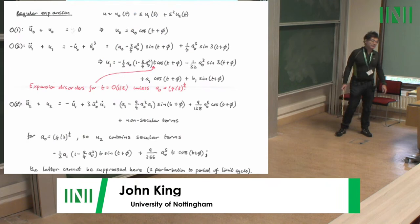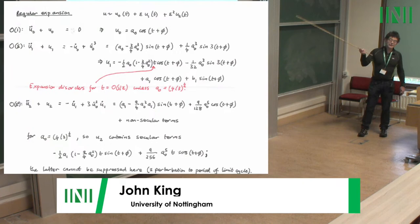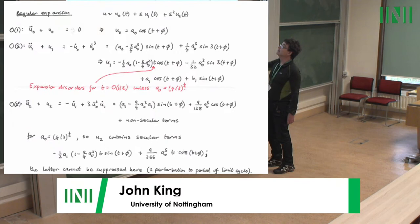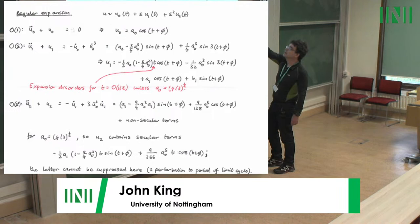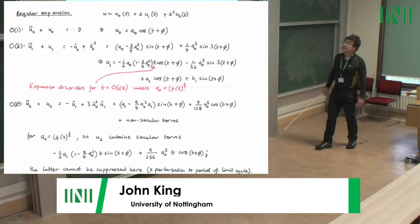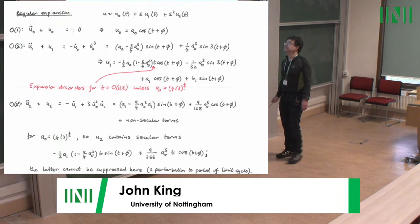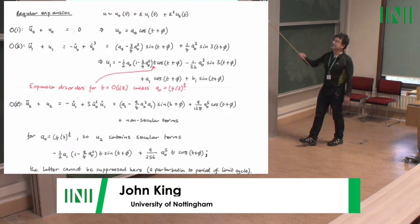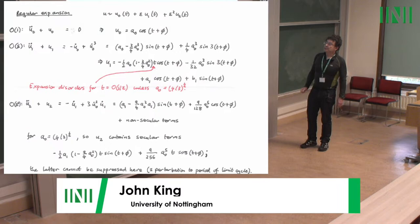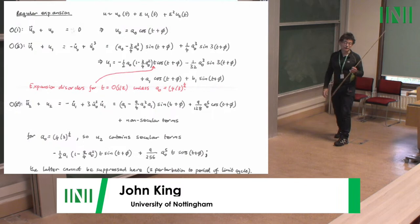I'm going to work up from the ground up, starting with what physicists call a perturbative expansion — we tend to call it a regular expansion — expanding in powers of epsilon. At leading order you get the harmonic oscillator. The leading order solution is a cosine with a phase shift and amplitude a-naught. Going to the first correction, you put in the dissipation on the right-hand side and solve for the general solution. There's immediately a problem: as t becomes large — specifically when t is order one-over-epsilon — the expansion disorders.